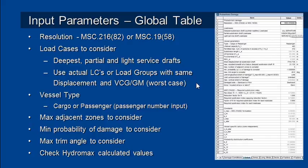You should use whichever of those gives you the worst case — it's often the load group with the empty tanks that will give the worst case. You should also choose the type of vessel: a cargo or a passenger vessel, and there are parameters to enter for the number of adjacent zones to consider.